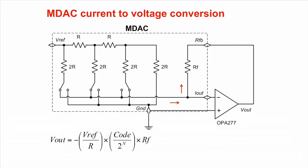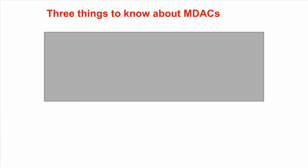So, MDACs have some interesting properties. However, there are three important things about MDACs that we should keep in mind. Number one is, by architecture, MDACs are current output DACs.